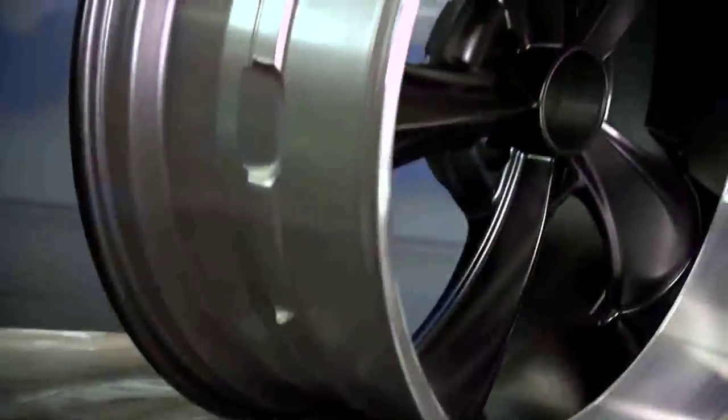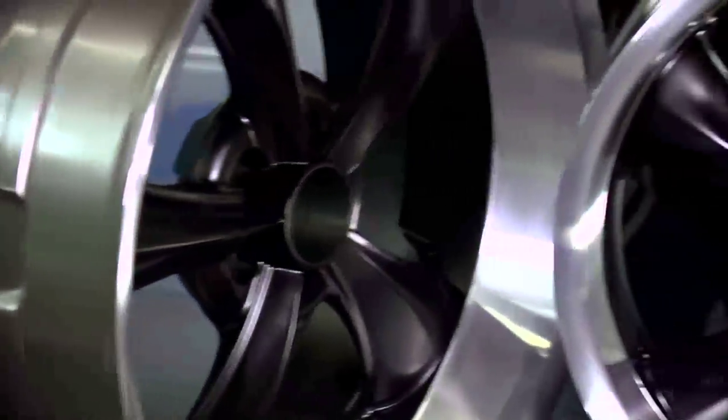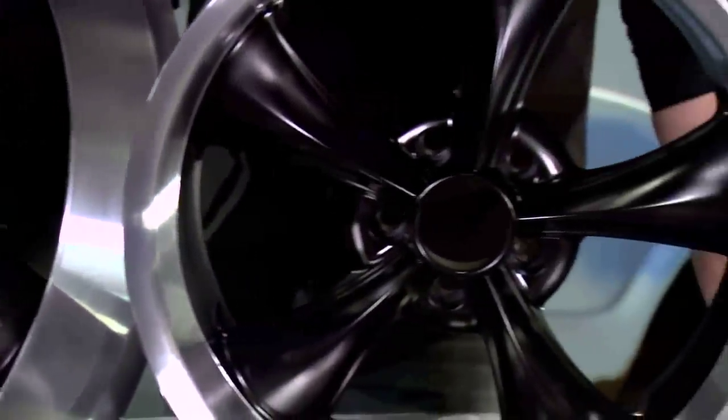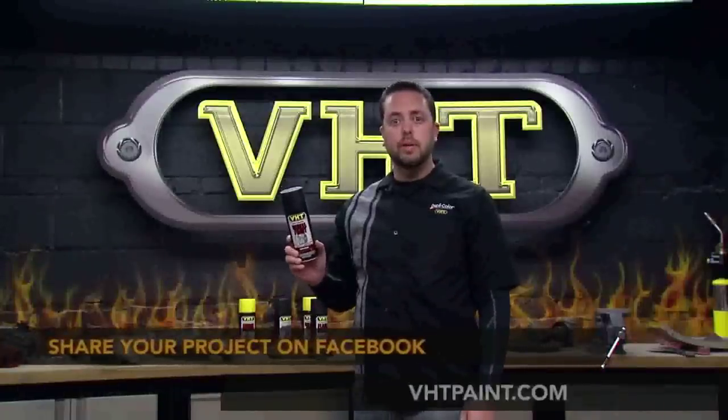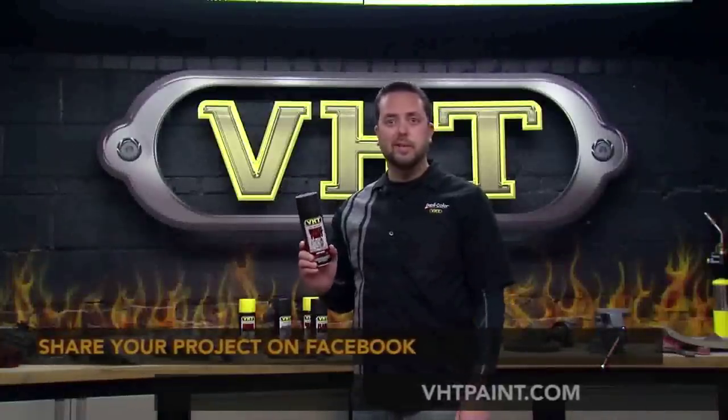We used our VHT wheel paint on our new wheels to give it a custom look and they look great. For more information on wheel paints, go to our website and show us what you can do on our Facebook page and stay tuned as we continue to work on our 1972 Columbus Satellite.